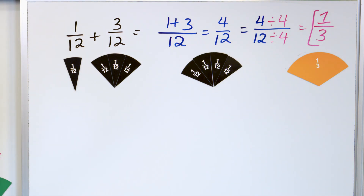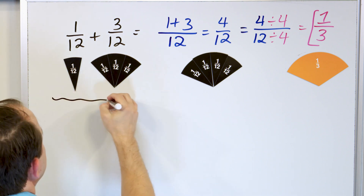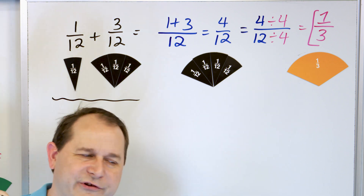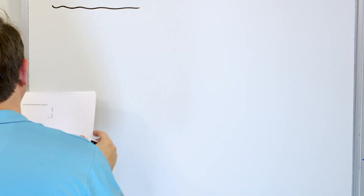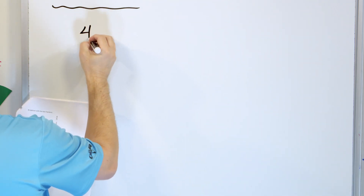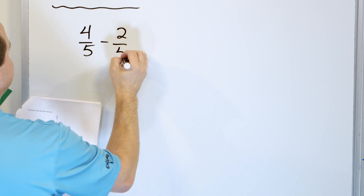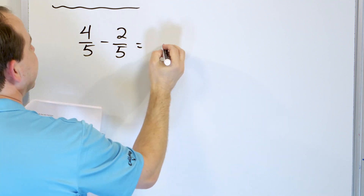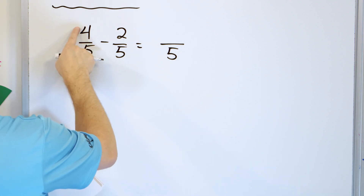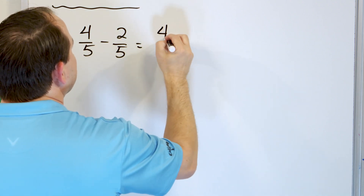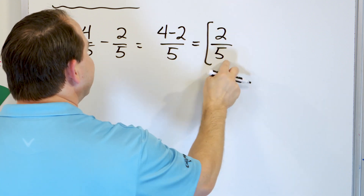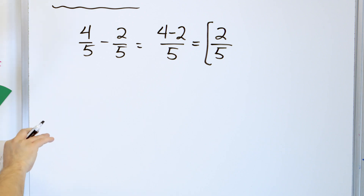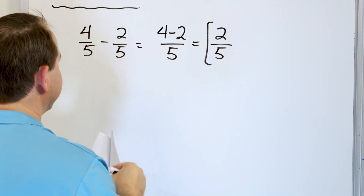So we have a few more problems, but we're not going to use the pictures anymore. They're very good here in the beginning, but we need to get practice with just cranking through the problems without doing the pictures. Let's take a look at the fraction four-fifths, and we'll subtract the fraction two-fifths. The denominator is the same, so five goes into our answer. Four minus two is two, and the bottom is five. The answer is two-fifths — we cannot simplify that any further.